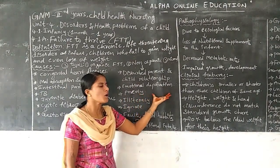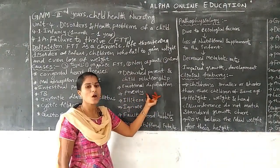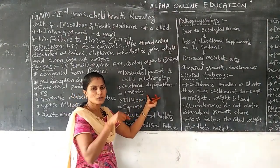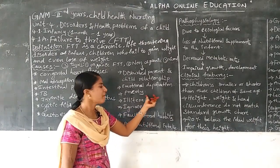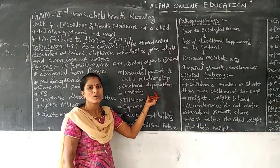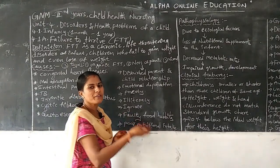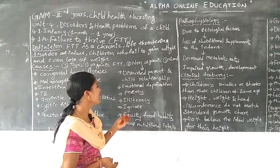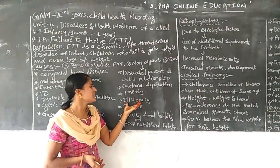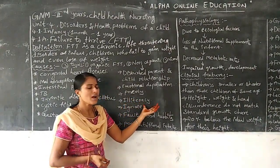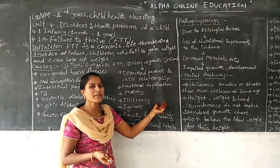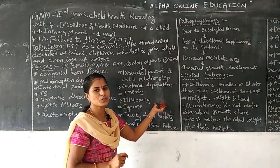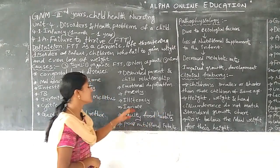Due to the poor economical status, the parents are not providing the richest protein diet that the infant should receive for improving their growth. Next one is illiteracy. Uneducated people are not having sufficient awareness about which is the richest nutritious food to the infant. This is one reason for failure to thrive.